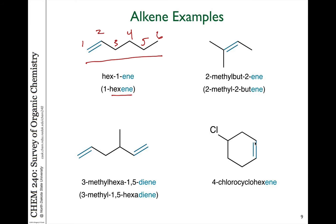Traditionally, we have to put the number for where the double bond starts in the chain, numbering from the side that is closest to an end. In this case, we number one from the left side. So we would normally have called this 1-hexene, but in recent years IUPAC rules have changed a little bit. Formally, we call this hex-1-ene, meaning the one refers to the point where the double bond starts.